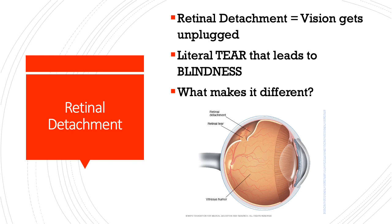Without blood supply to the eye, the result is blindness — and you can see it's in that back area right where the nerve connects to your brain that tells your eye what it's seeing. This is a literal tear, and it can happen for a variety of reasons: previous surgeries, eye trauma, or some people are just more genetically predisposed to having it. Once you have one retinal detachment, you have a higher chance of the other eye having one too.